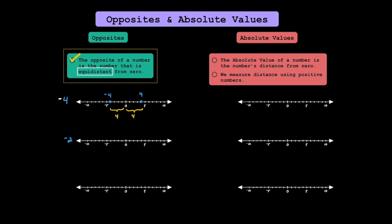What if we had the number negative 2? Here we're going to plot negative 2, which is to the left of zero. Negative 2 is just 2 units away from zero. The only other number that is also 2 units away from zero is going to be positive 2. Since we use negatives to show opposites, we could put a negative in front here. The opposite of negative 2 is just positive 2.